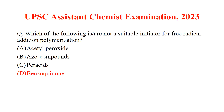Which of the following is not suitable as an initiator for free radical addition polymerization? These are all peroxy compounds, so they act as initiators, whereas benzophenone is an inhibitor. So the answer is option D.